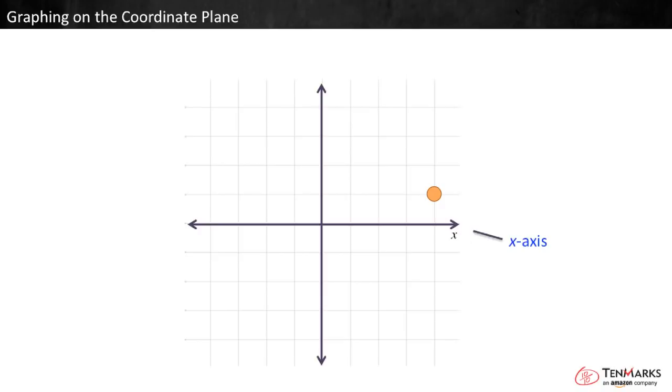The horizontal axis is called the x-axis. The vertical axis is called the y-axis. When we describe a location, we always start counting from the place where the two axes cross. Because this is the point where we start counting, it is called the origin.